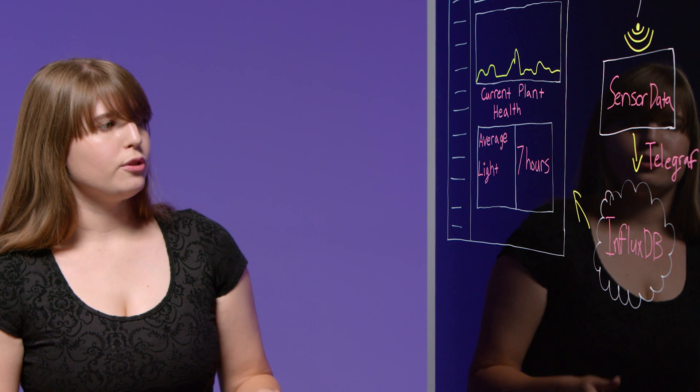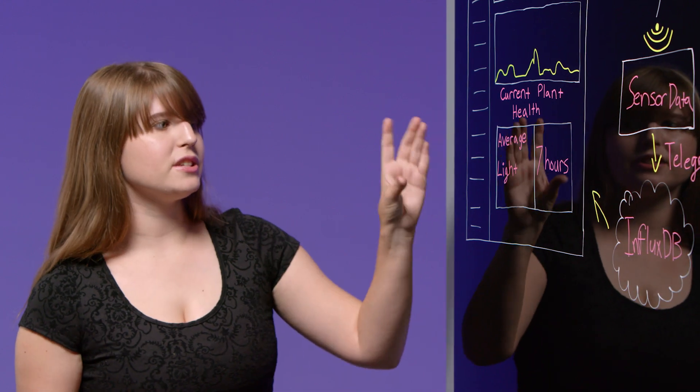InfluxDB is also great at downsampling. What downsampling does is it can give me averages or just smaller data sets. So instead of storing things by the second, I can store them by the minute or even the hour. And I can get averages as well for a month, a week, etc.